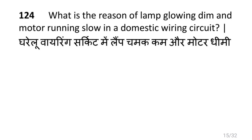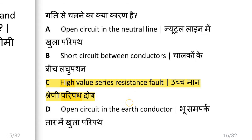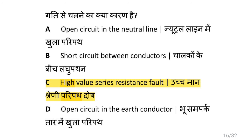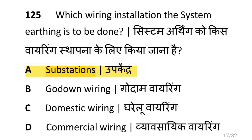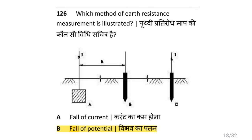What is the reason for a lamp glowing dim and motor running slow in a domestic wiring circuit? High value series resistance fault. Which wiring installation requires system earthing? That is substation. Which method of earth resistance measurement is illustrated? That is the fall of potential method.